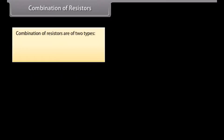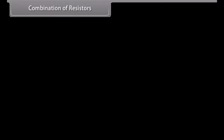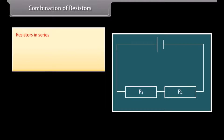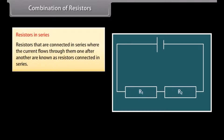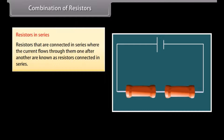Combinations of resistors are of two types: resistors in series and resistors in parallel. Resistors connected in series are those where the current flows through them one after another. Here, the current depends on the applied voltage, the number of components, and the nature of components in the circuit.